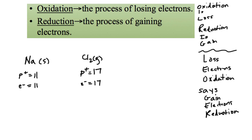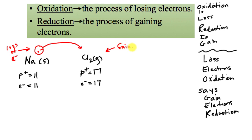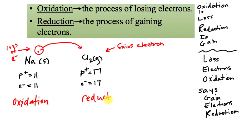Sodium has an extra electron — represented by a dot — and it's going to lose that electron to chlorine. So sodium undergoes a loss of electrons, which is oxidation. Chlorine gains the electron, so chlorine undergoes reduction. Sodium has undergone oxidation because it lost an electron, while chlorine has undergone reduction.